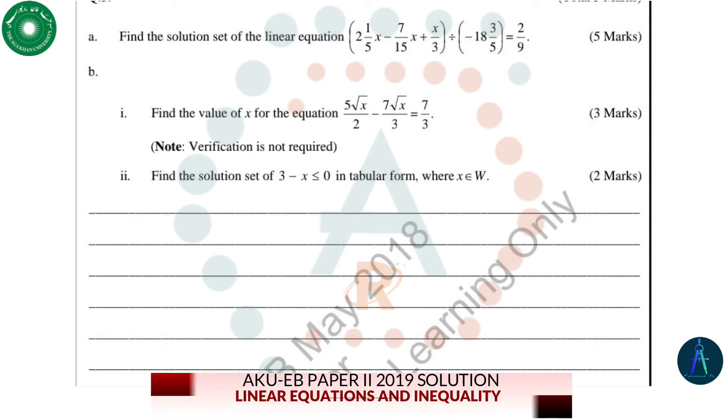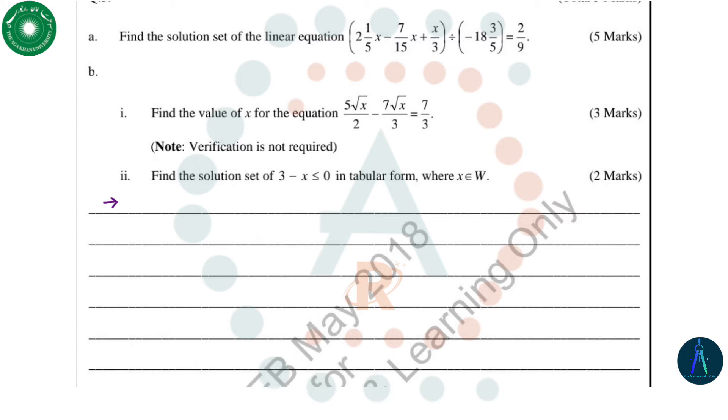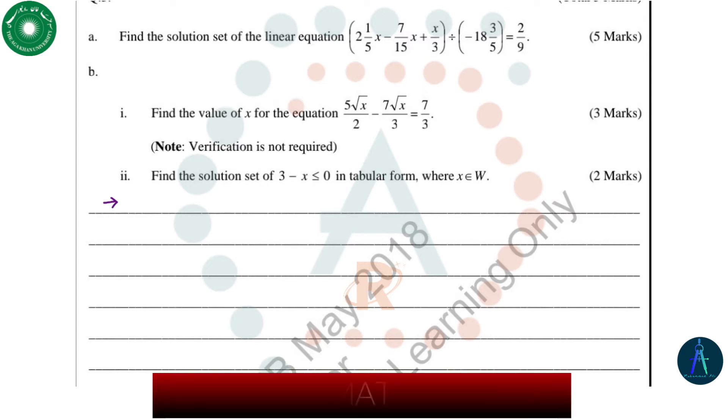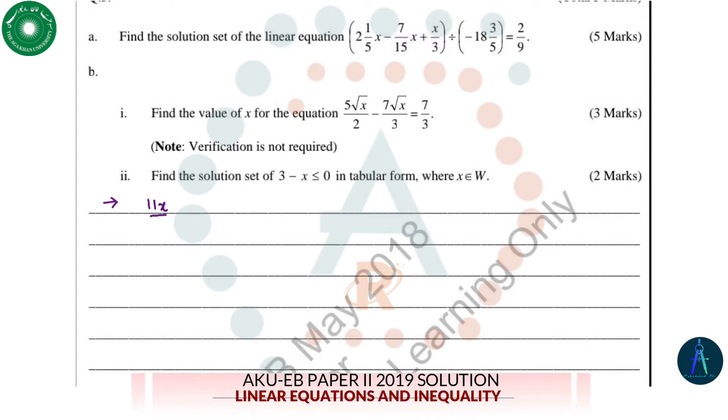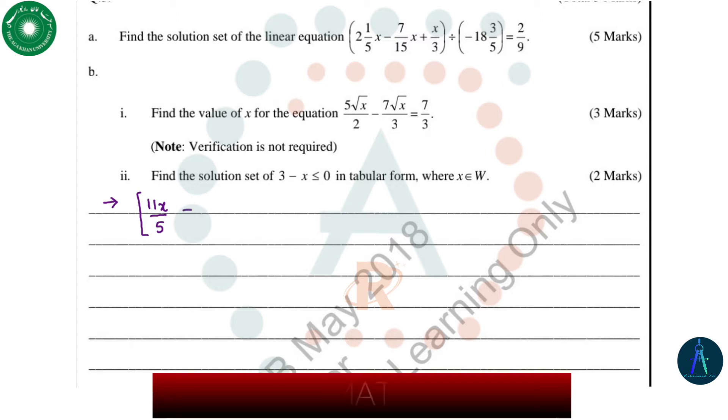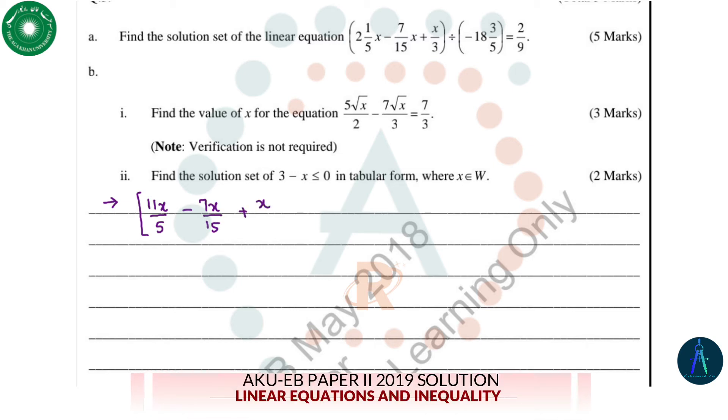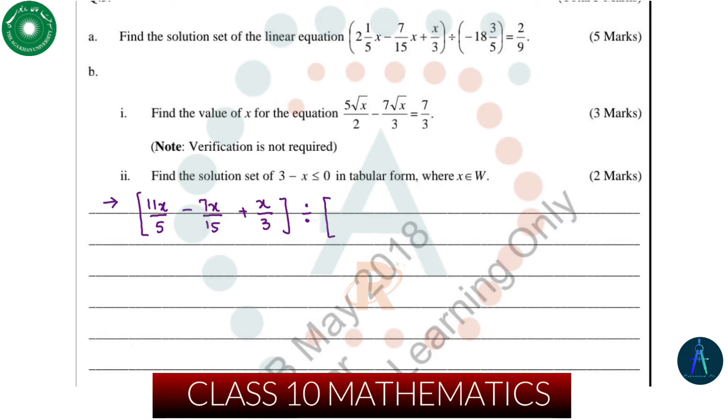First we will solve Part A. In the first bracket, 2 whole 1/5 x, so this will become 5 times 2 or 10 plus 1, which is 11x over 5. The mixed fraction given, we convert it into an improper fraction. Then the second fraction is 7x over 15, and last we have x over 3, then divided by 18 whole and 3/5.